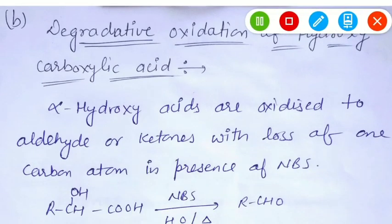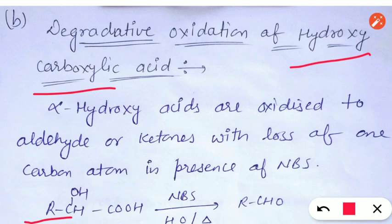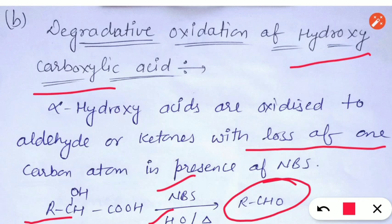Another example of oxidation with N-Bromosuccinimide is the degradative oxidation of alpha-hydroxy carboxylic acids. An alpha-hydroxy carboxylic acid reacted with N-Bromosuccinimide in the presence of water results in the formation of an aldehyde with the loss of one carbon atom. The carbonyl compound (aldehyde or ketone) formed depends on the nature of the alpha-hydroxy acid and has one carbon fewer than the precursor.